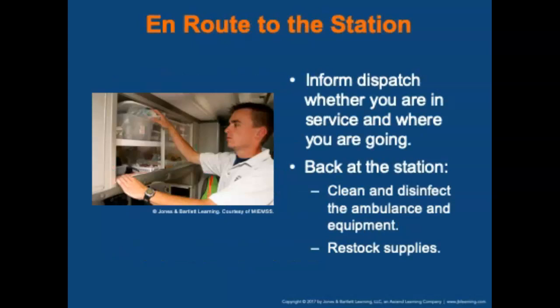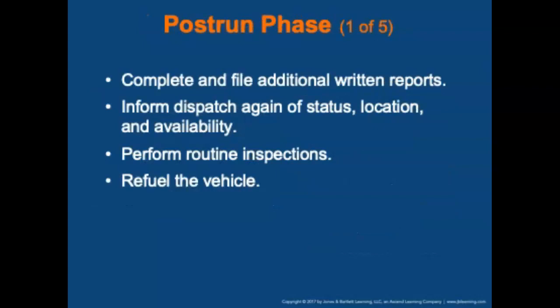When en route to the station, inform dispatch whether you are in service and where you will be going. As soon as you are back at the station, clean and disinfect the ambulance and equipment if you have not already done so at the hospital, and restock supplies. In the post-run phase, complete and file additional written reports, inform dispatch of status and location and availability, perform routine inspections, and refuel the vehicle if needed.